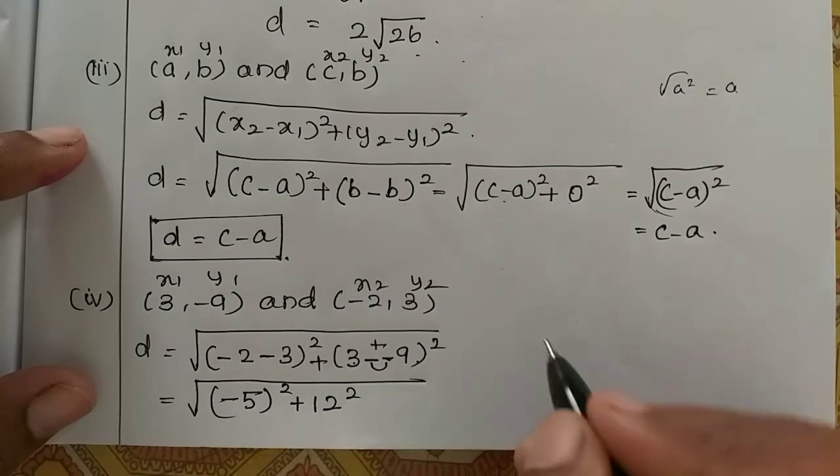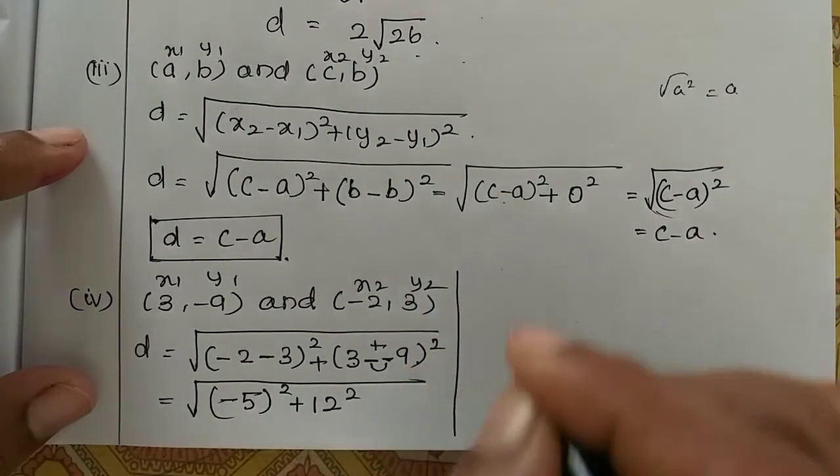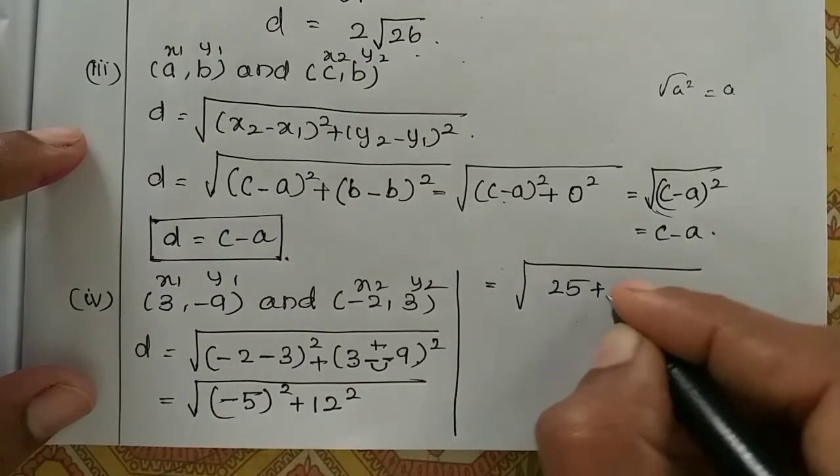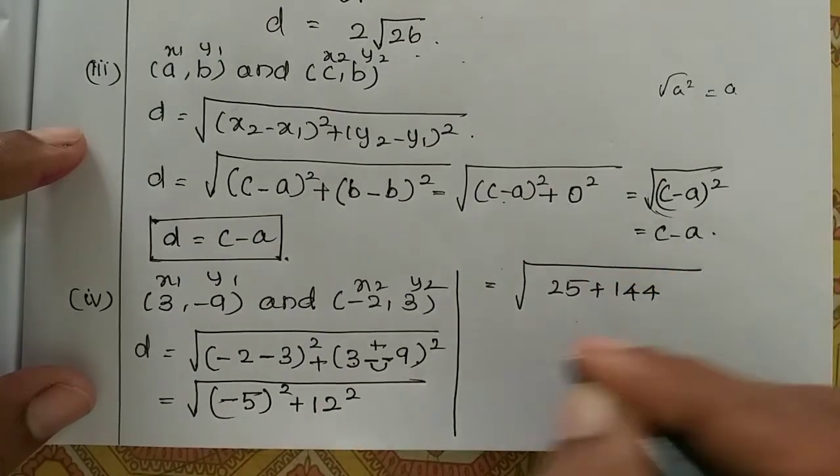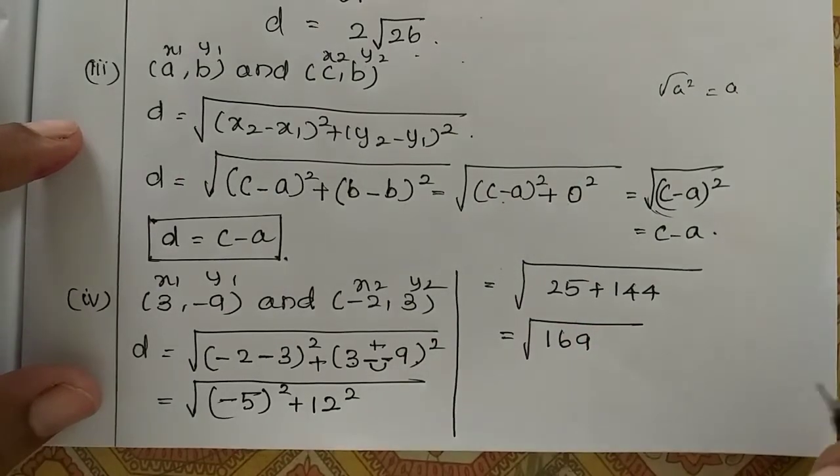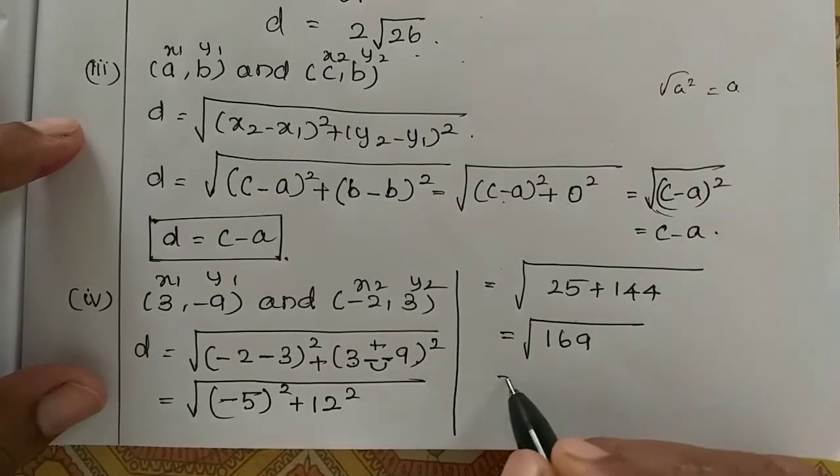Okay? So which is equal to 5 square 25. Plus 12 square 144. Okay. So add means root of 169. So the distance comes positive only.